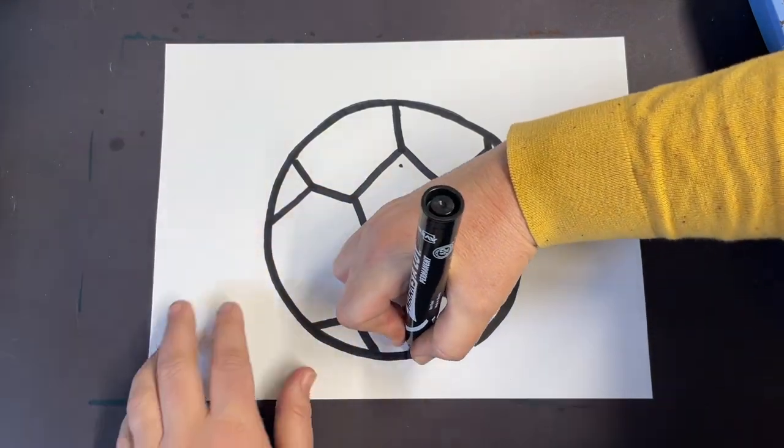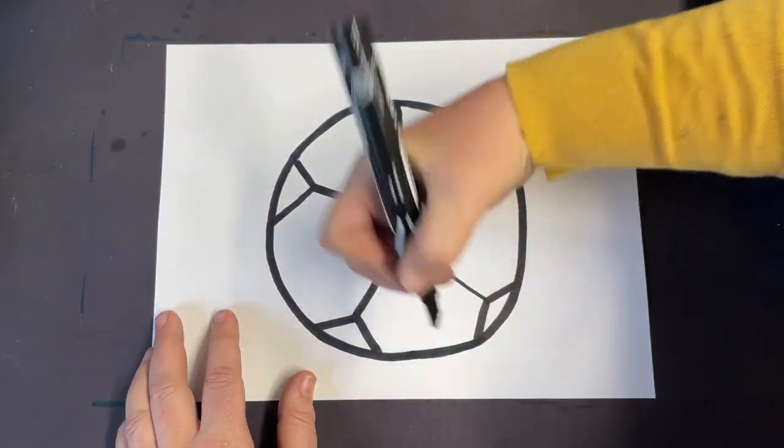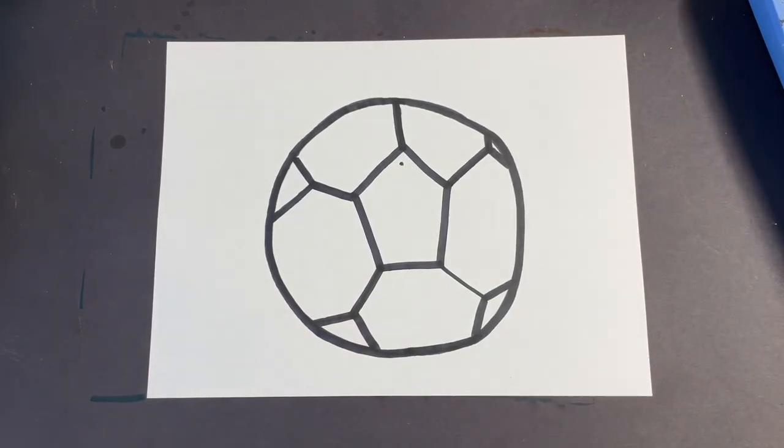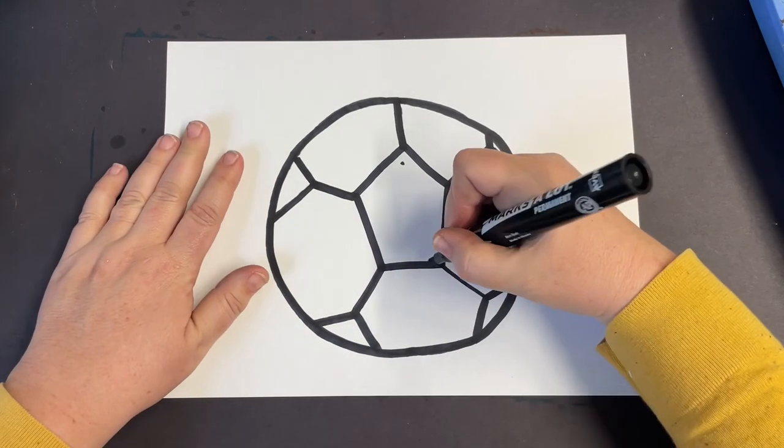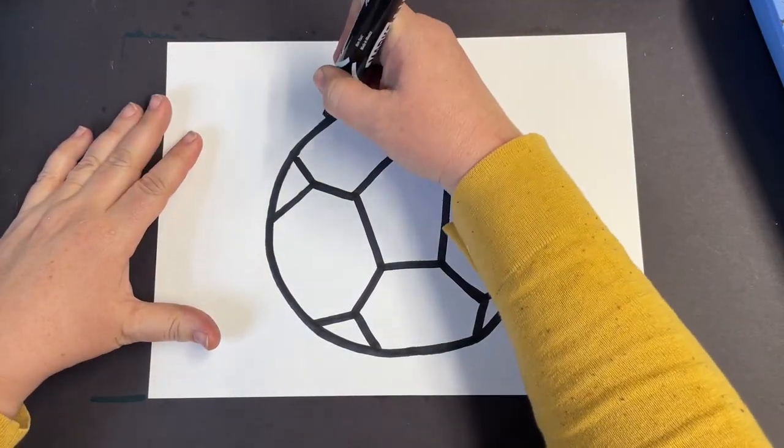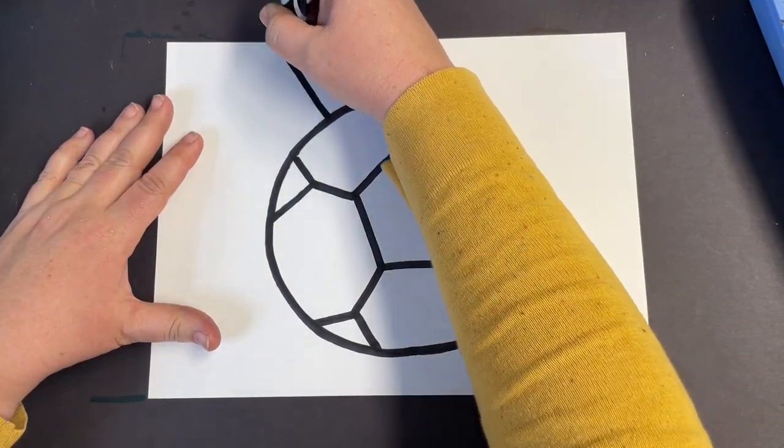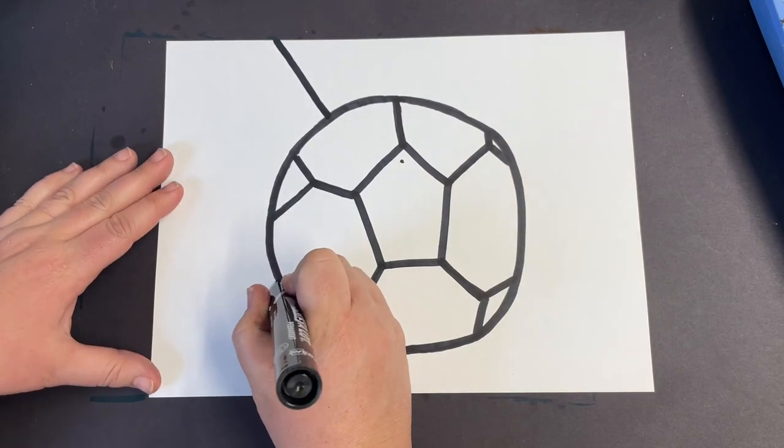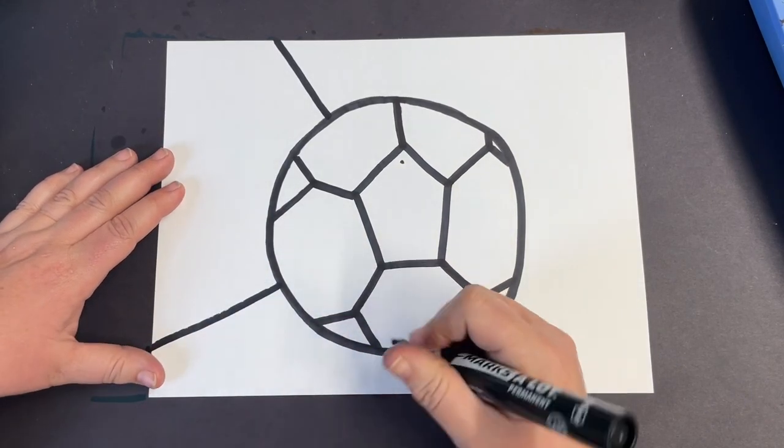I'm going to go ahead and outline my outer circle to make it nice and thick and dark. And that's it. That's pretty much the entire drawing. Now we're going to go ahead and break up our background into different sections.